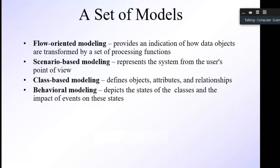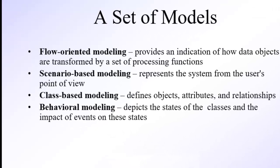Next is a set of models used for analysis modeling in the requirement phase. After you finalize your requirements, the last step is analysis modeling — converting requirements from textual form to graphical form. You can use four types of models to design UML diagrams. First is flow-oriented modeling, in which we discuss the sequential diagram oriented towards the flow of information — representing the flow of data or process from start to end used for software development.